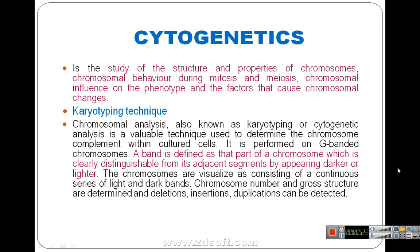Cytogenetics is the study of structure and properties of chromosomes — chromosomal behavior during mitosis and meiosis, chromosomal influence on the phenotype, and the factors that cause chromosomal changes. When we study all these things, we call it cytogenetics. Karyotyping is a technique in which we analyze chromosomes.